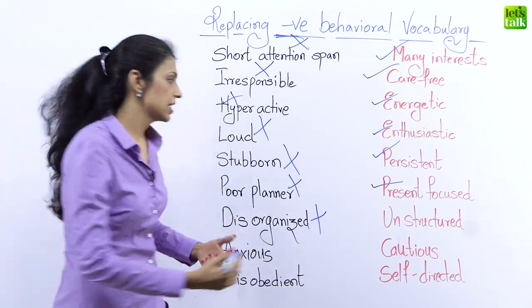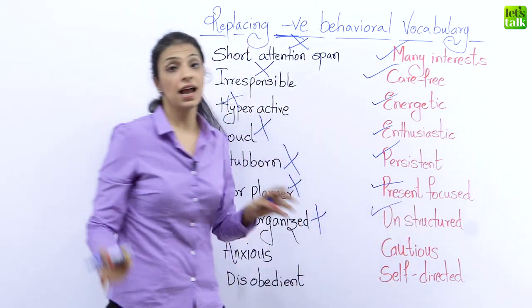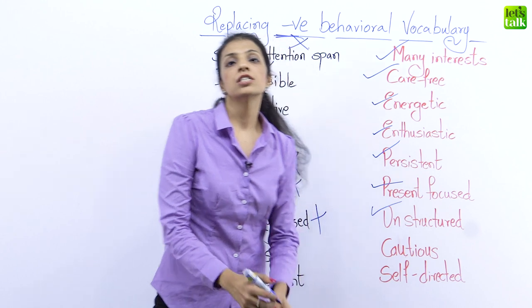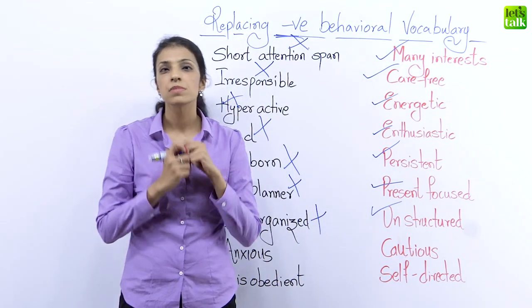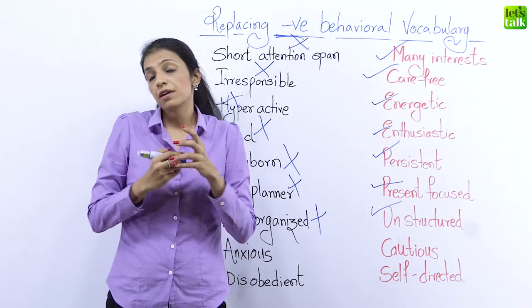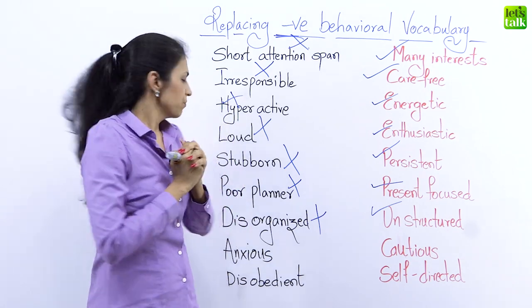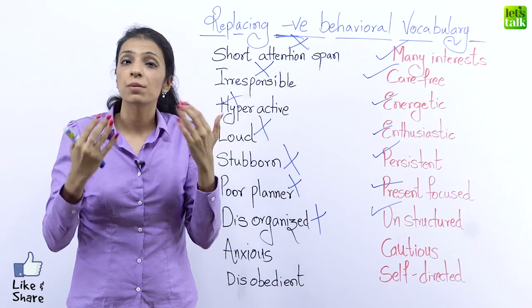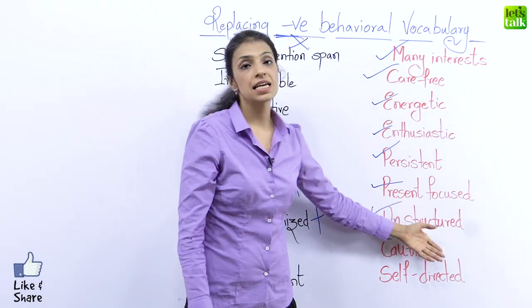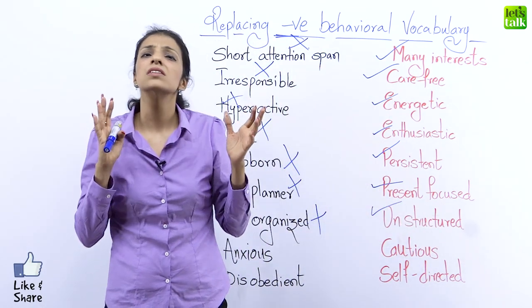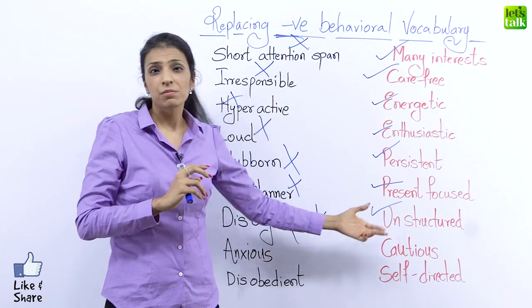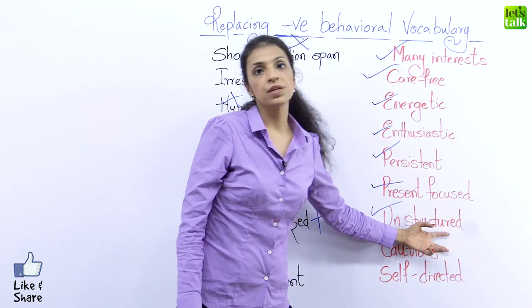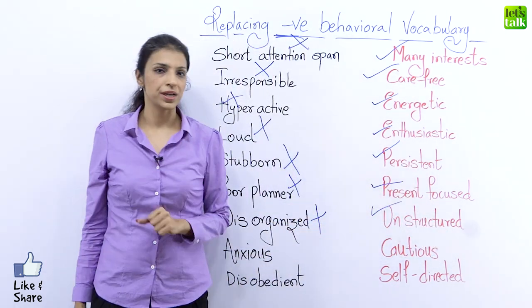What you could say — a better, more professional, and positive word — is unstructured. For example, if I'm at a meeting and I say I am very disorganized in my head with a lot of thoughts, I'm not speaking well about myself. But if I say I'm unstructured with my thoughts, it is better than using the word disorganized, and that is how unstructured replaces disorganized in a better way.